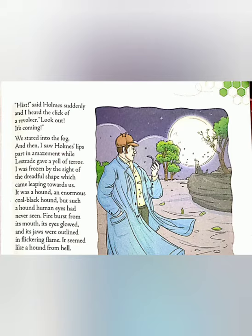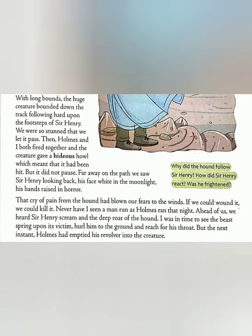How does Watson describe this hound? It was coal black in colour, enormous — that means gigantic — in size. This hound had huge eyes that seemed human. It felt like fire was coming out of its mouth and its eyes were glowing, as if some kind of light was put in them. Its jaws were outlined in flickering flame — flickering means on and off — as if the flame was just putting on and off. It looked like a hound from hell. With long bounds, the huge creature bounded down the track following hard upon the footsteps of Sir Henry.